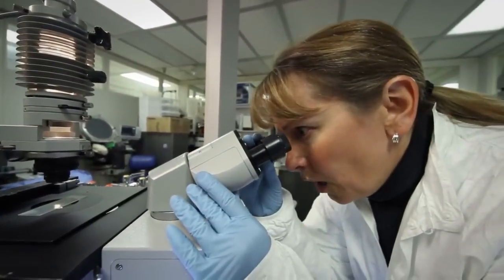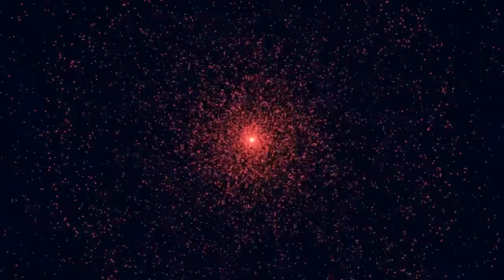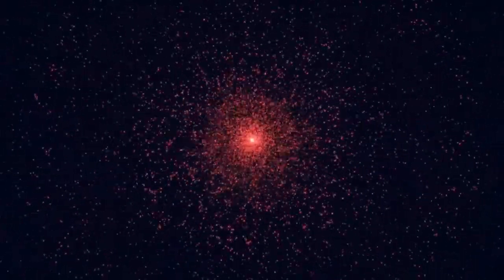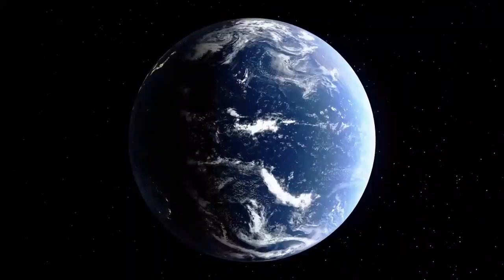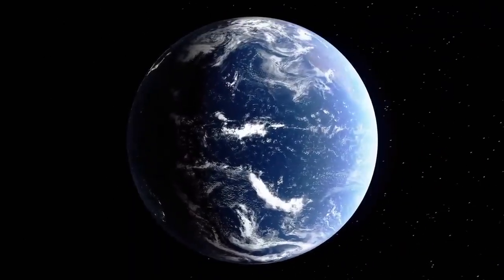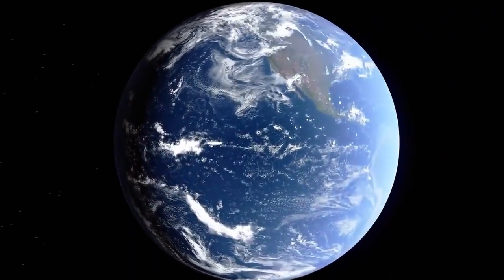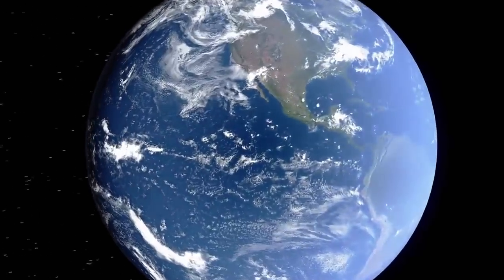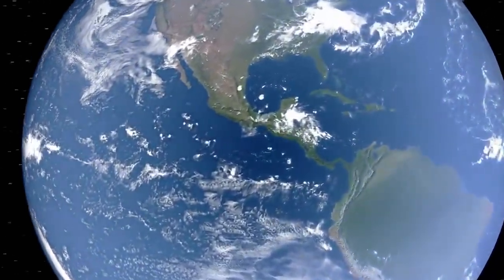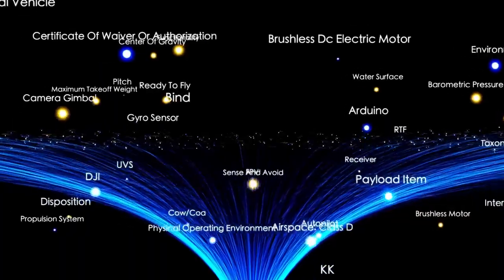Gamma-ray bursts, sometimes linked with certain supernovae, could strip away Earth's ozone layer, leading to harmful levels of ultraviolet radiation. This could endanger human health, disrupt ecosystems, and negatively impact agriculture. Additionally, the electromagnetic pulse from a nearby explosion could interfere with satellites and electronic systems.